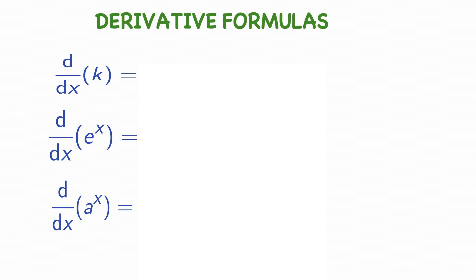Third formula: derivative of a power x. You remember the point — it starts with a power x. What is derivative of a power x? a power x into log a base e. That's it. Very simple. Derivative of constant is 0. Derivative of e power x is e power x. Derivative of a power x is a power x into log a base e.